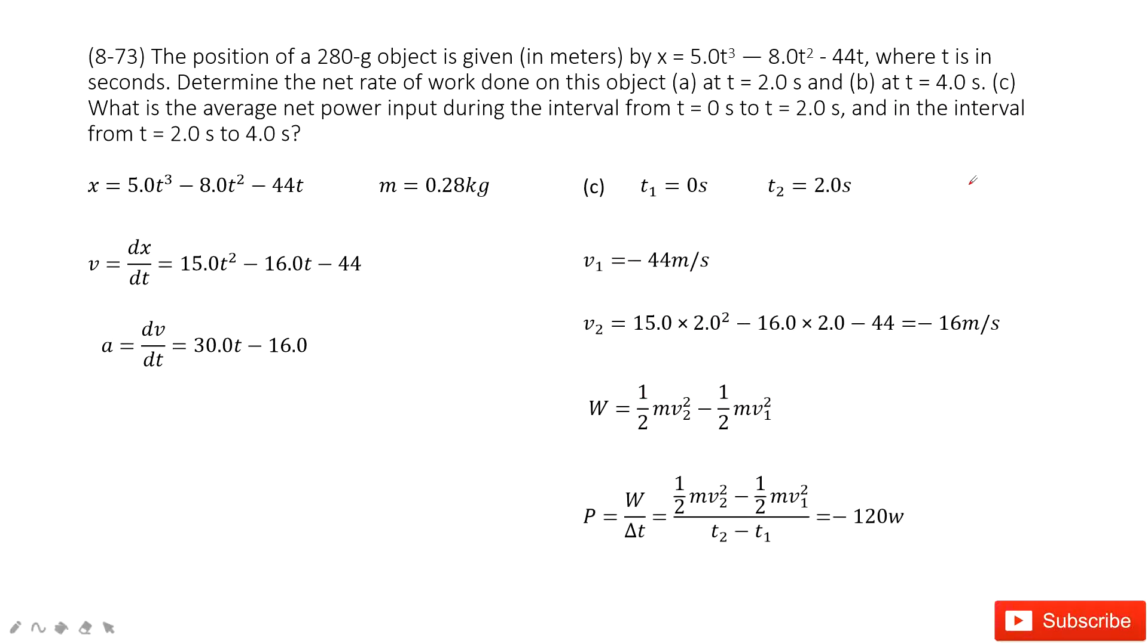The next one, we can see, we need to find the average net power during this time period. So this time period, initial time is 0 seconds. The final time is 2 seconds. Now it gives you a period of time. So in this one, when we want to find the power, it is average power, agree?